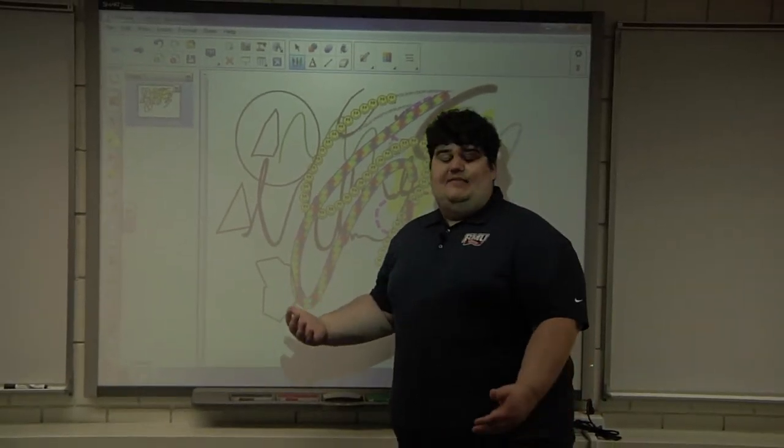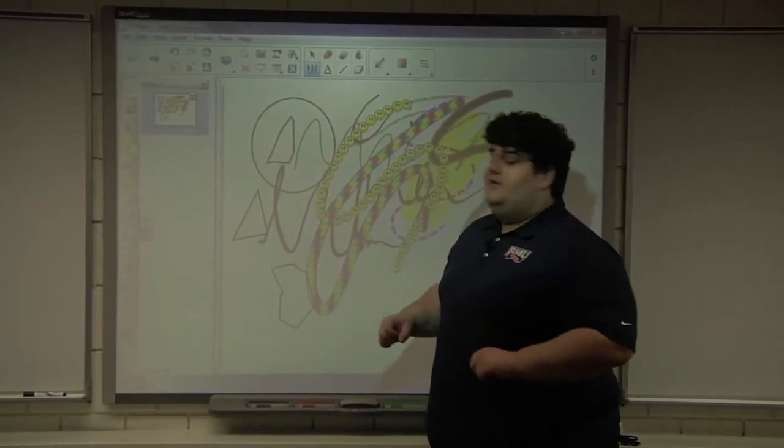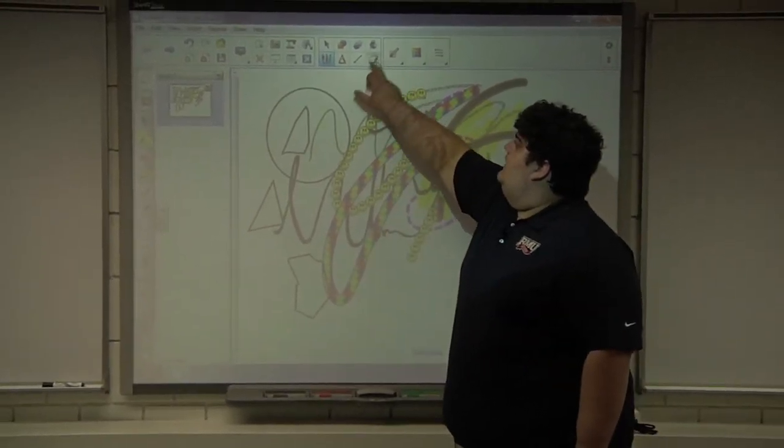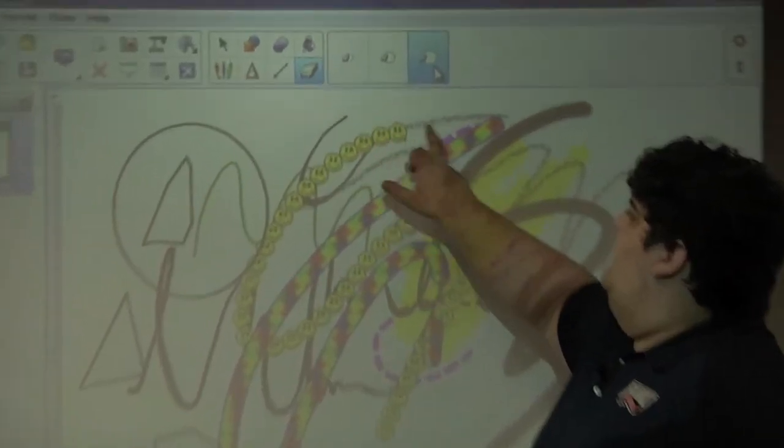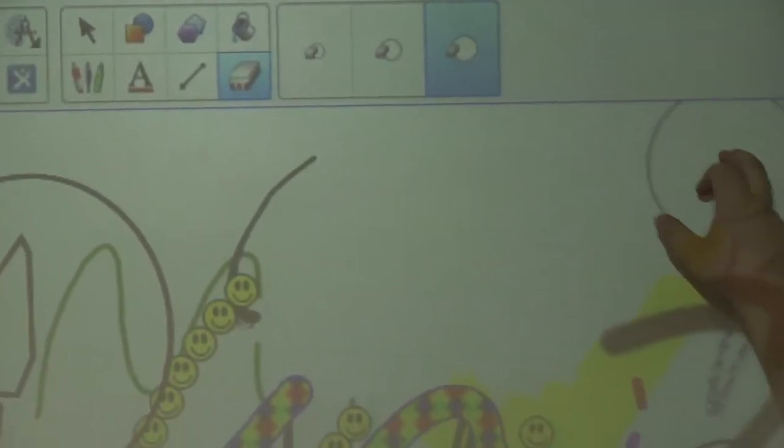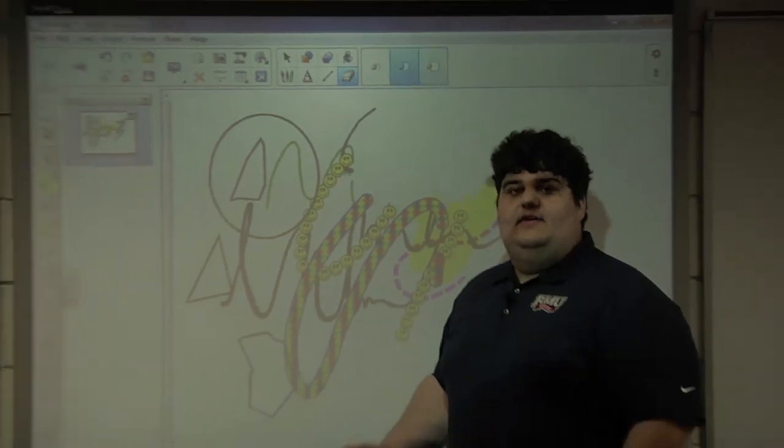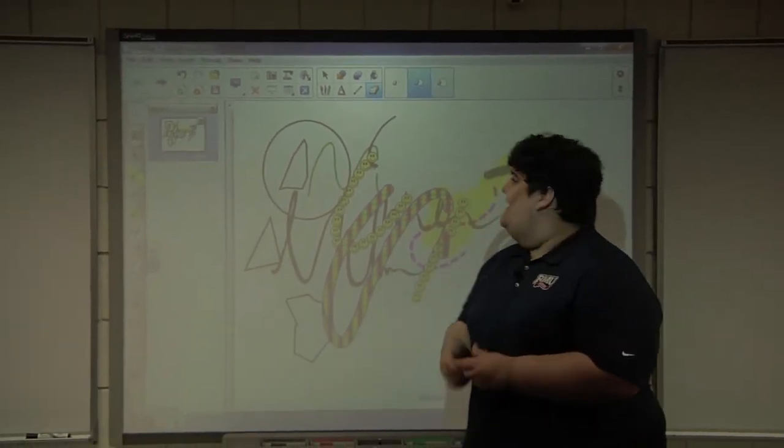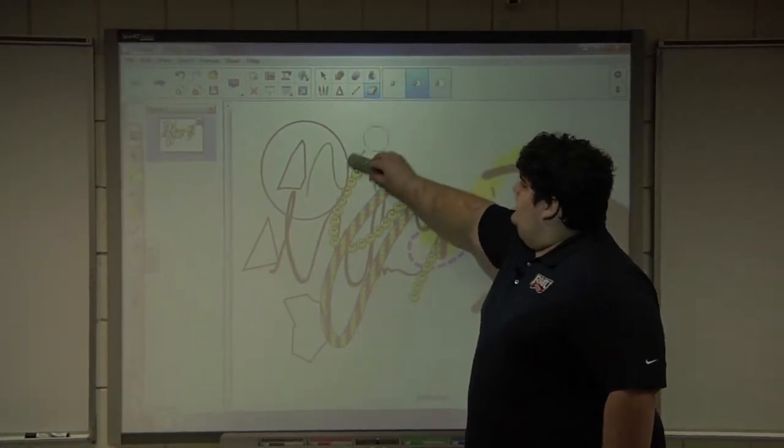So now we have all this stuff on here. We want to get rid of it. Two different ways to erase. We can click on the eraser icon at the top here, choose different sizes, just go over it with our finger. Or like I said there is an eraser on the smart board tray. Pick it up, start erasing what you want.